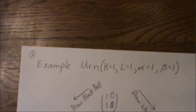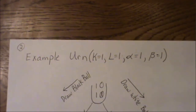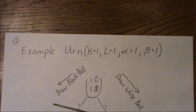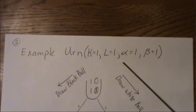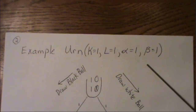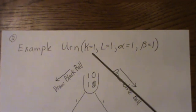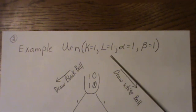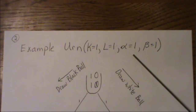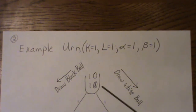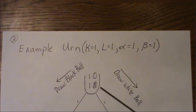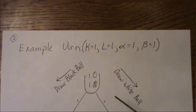Here we're going to look at a specific urn: the 1,1,1,1 urn model. There are two treatments, K equal 1 and L equal 1. Alpha equals 1 means there's one ball of each color in the urn to start out with. When we draw a ball we put it back and then put beta number of balls of the opposite color back.